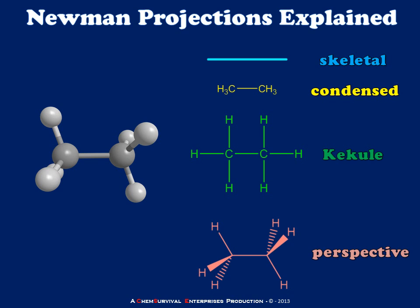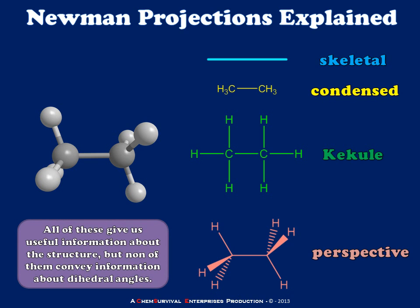Although the perspective molecular formula does show us a little bit about stereochemistry and geometry and bond angles, it's difficult to represent very specific dihedrals. In other words, if we were interested in the angle between carbon-hydrogen bonds, we would have a difficult time demonstrating that using any of the structures we've already learned to draw. When we want to give very specific information about these dihedral angles, we turn to Newman projections.